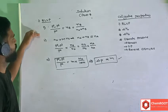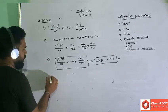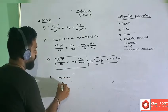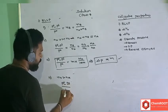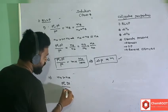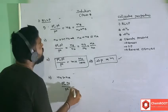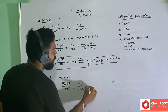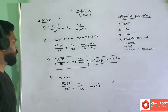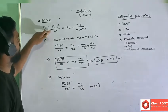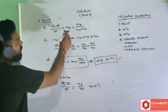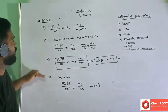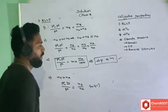For cases where N_B is not very much less than N_A — i.e., concentrated solutions — we can write (P0 − Ps)/Ps = N_B/N_A. This formula is applicable even for concentrated solutions. These are the important formulas related to relative lowering of vapor pressure.